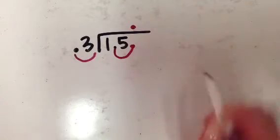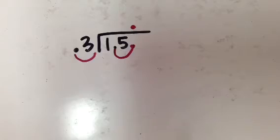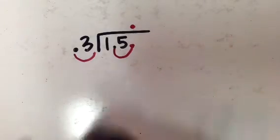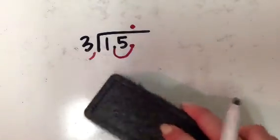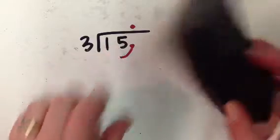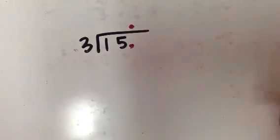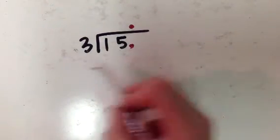And so then now I still have to bring my decimal straight up, but this is gone and this guy is gone, and all I'm left with is basically like 3 into 15, right?